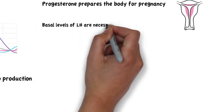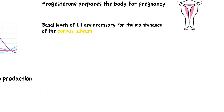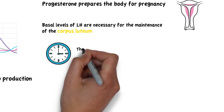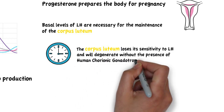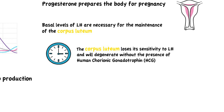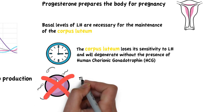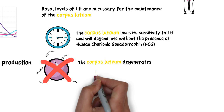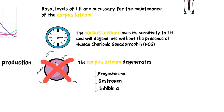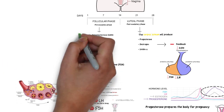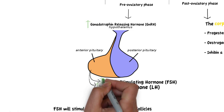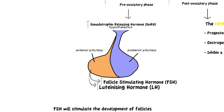Basal levels of luteinizing hormone are necessary for the maintenance of the corpus luteum. However, with time, the corpus luteum loses its sensitivity to LH and it will degenerate without the presence of human chorionic gonadotrophin, or HCG, secreted from an implanted embryo. Therefore, if there is no implantation of an egg, the corpus luteum degenerates, leading to a fall in progesterone, estrogen, and inhibin-A. Thus, the lining of the uterus sheds and the pituitary gonadotrophs and the neuroendocrine cells of the hypothalamus are disinhibited, allowing for the production of luteinizing hormone and follicle-stimulating hormone and the initiation of a new cycle.